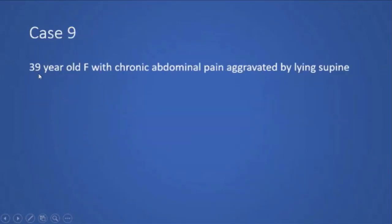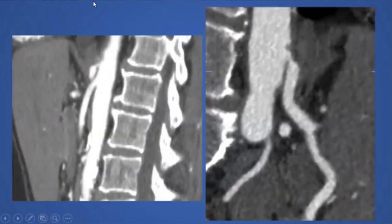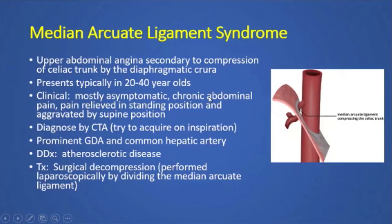The next case is a 39-year-old female with chronic abdominal pain aggravated by lying supine. CT angiogram shows stenosis at the celiac axis with post-stenotic dilation — compression followed by post-stenotic dilation — classic median arcuate ligament syndrome. The underlying etiology is compression by the median arcuate ligament causing upper abdominal angina, typically in 20–40-year-olds. Diagnosis is often delayed as patients are worked up for other conditions. Treatment is surgical decompression; stenting across this is not appropriate as it is a physical compression.